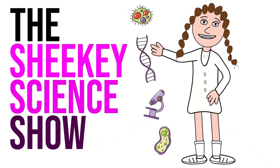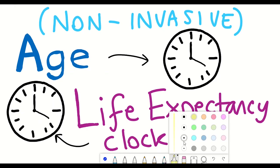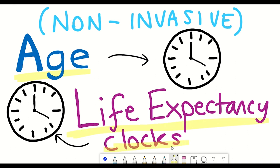Hello and welcome to the Shooky Science Show where in this video I'm going to talk about a recent study that came out of David Sinclair's lab whereby they developed two different mouse frailty clocks, one which can predict a mouse's biological age and a second clock that can predict when it will die.